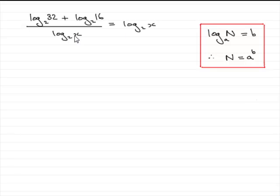Well, what I'd want to do in an equation like this - I've got a fractional equation, there's my fraction down here - I'd want to get rid of the fraction. So I can do that by multiplying both sides by log₂(x).